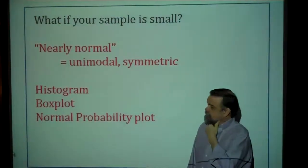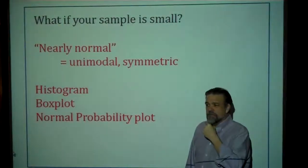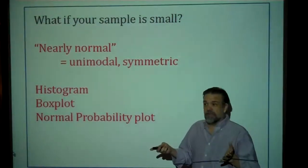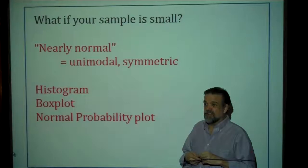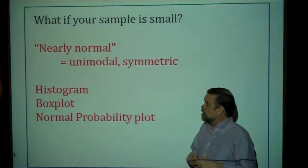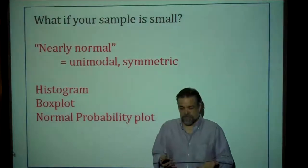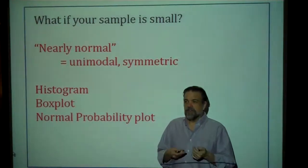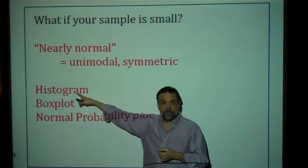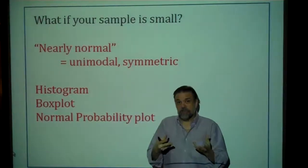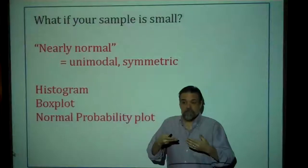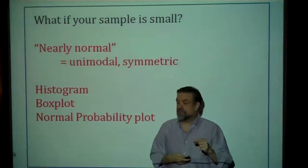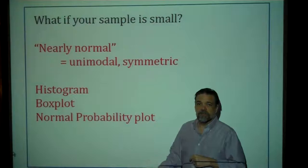We breezed past what to do if the population is not normal. If we weren't told the population is normal and we had a really small sample size — say 5 or 6 — you look at your sample and ask: does it look like it came from a normal population? Look at the histogram and the box plot: does the box plot look symmetric? Does the histogram look unimodal? If so, you'd say it probably came from a unimodal and symmetric population.